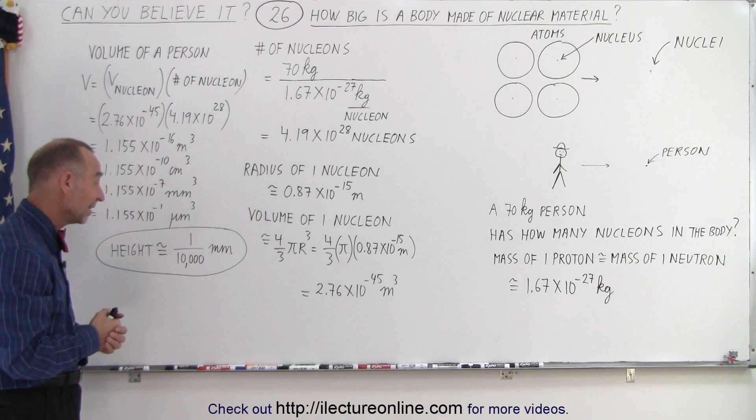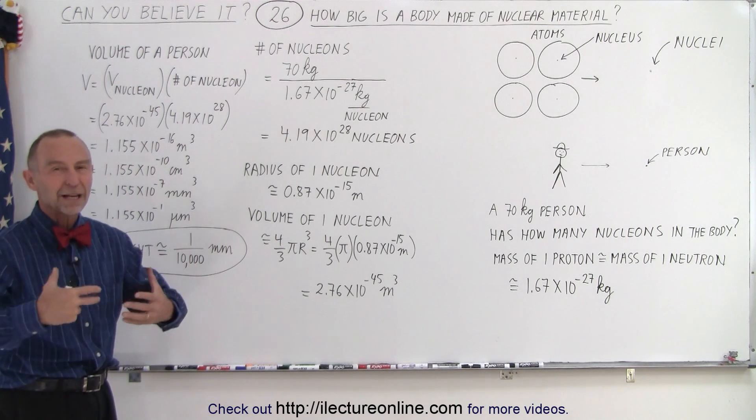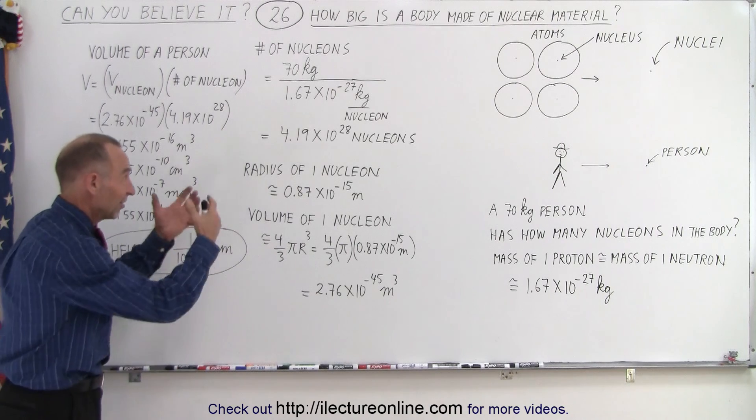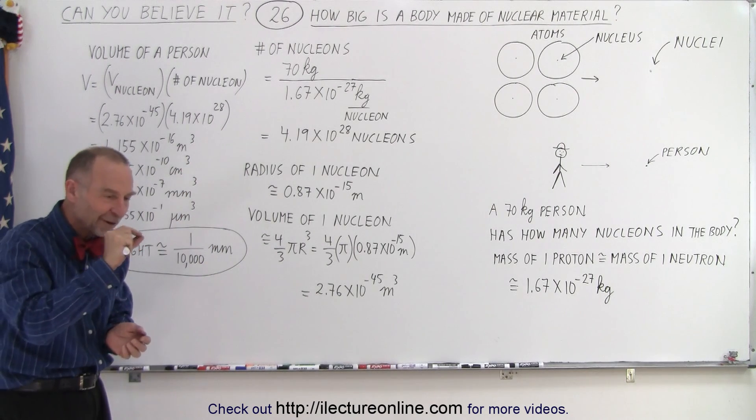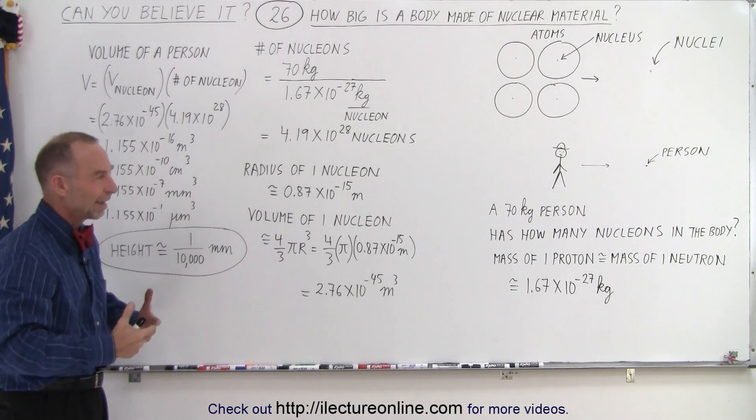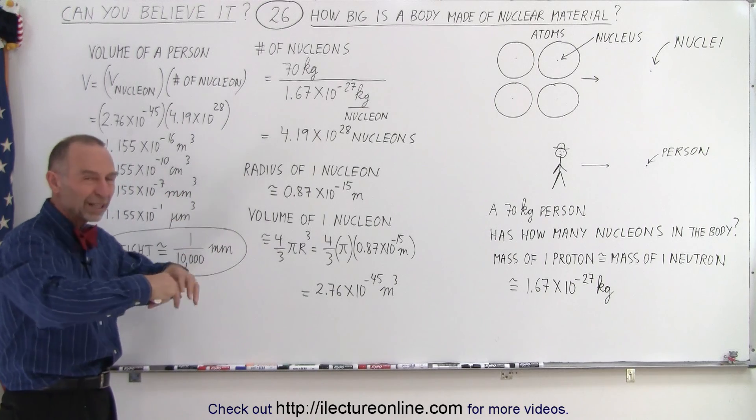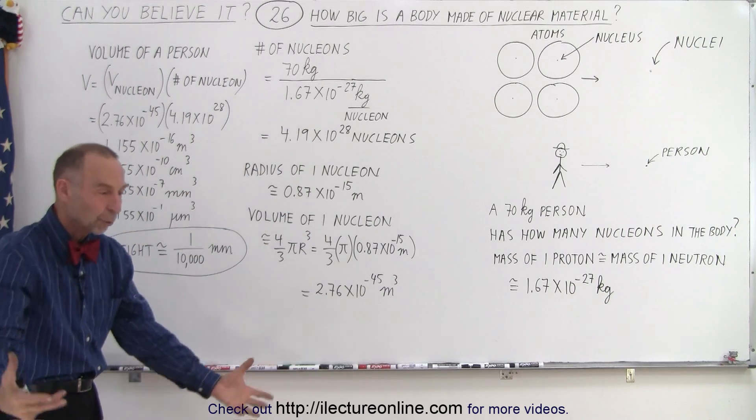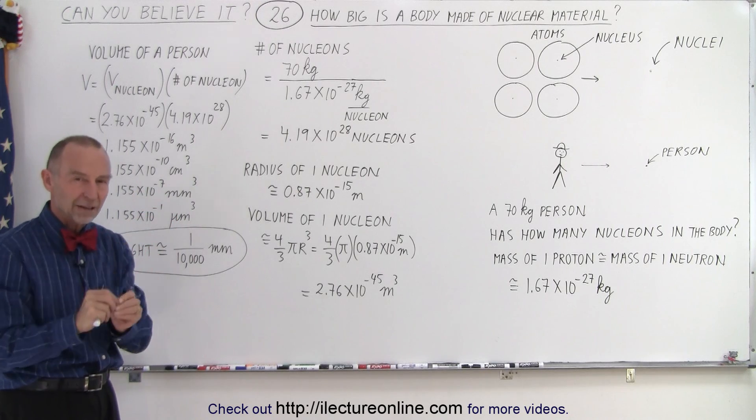So, you can see that we would be extremely small if somehow we were made out of nuclear material weighing the same amount, having the same amount of mass, 70 kilograms, but we would be very, very tiny indeed. So, again, in order to have structure to matter, you have to have atoms where the electrons are the ones that form the volume of the atoms.